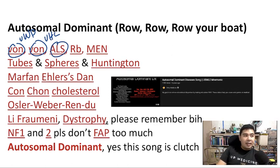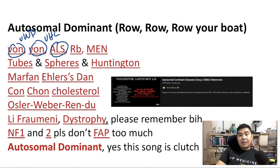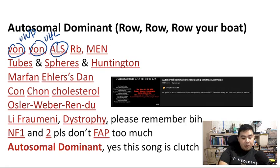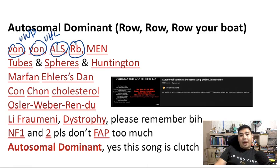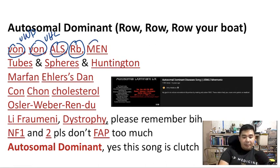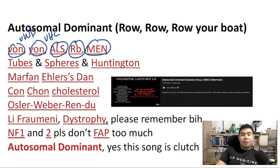ALS is amyotrophic lateral sclerosis, also known as Lou Gehrig's disease — the disease which famously afflicted Stephen Hawking. RB refers to the gene encoding for retinoblastoma; this cancer is transmitted autosomal dominantly. Then we have MEN — the multiple endocrine neoplasias: MEN1, 2A, and 2B — all autosomal dominant.